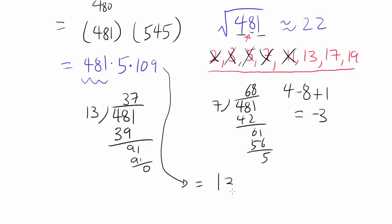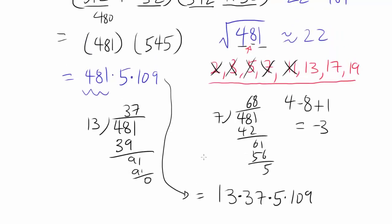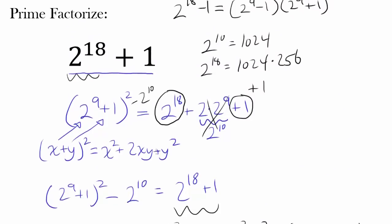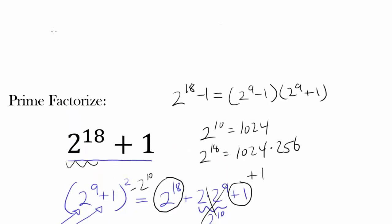And we also have 5 times 109, so we are done. We have 5, 13, 37, and 109. So you have 2 to the 18th plus 1, let me just write it up here, 2 to the 18th plus 1 is equal to 5 times 13 times 37 times 109, and we are done.